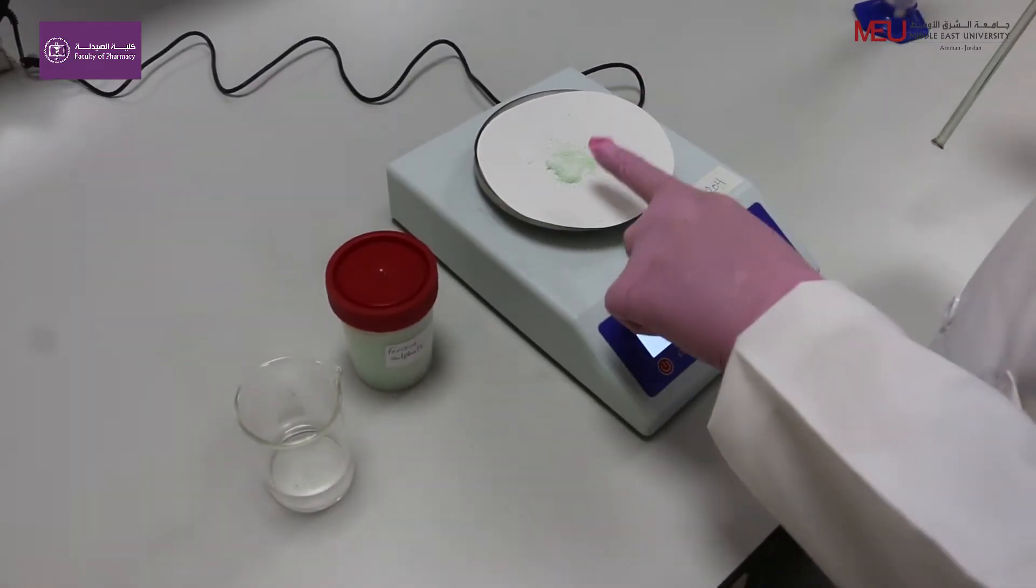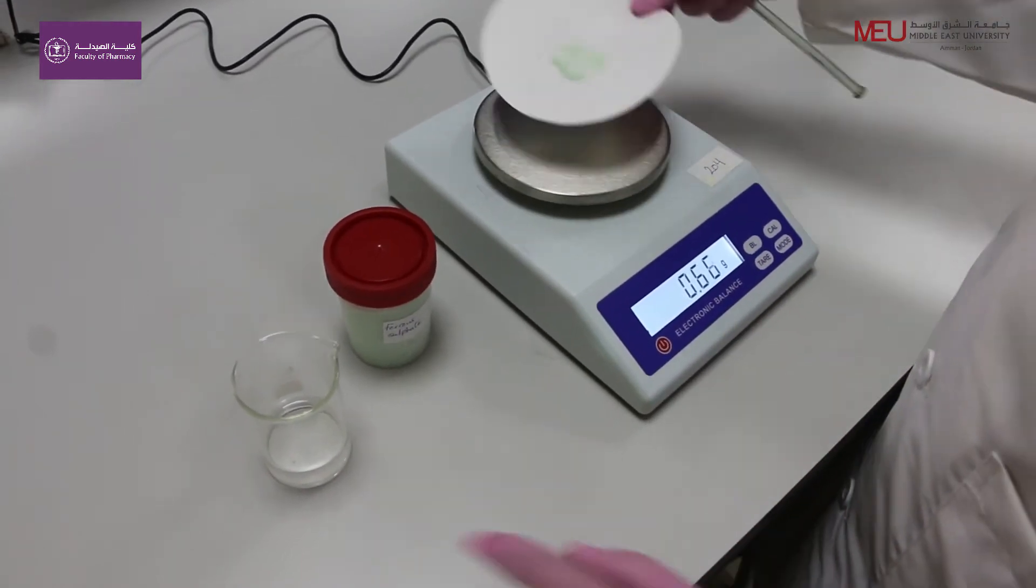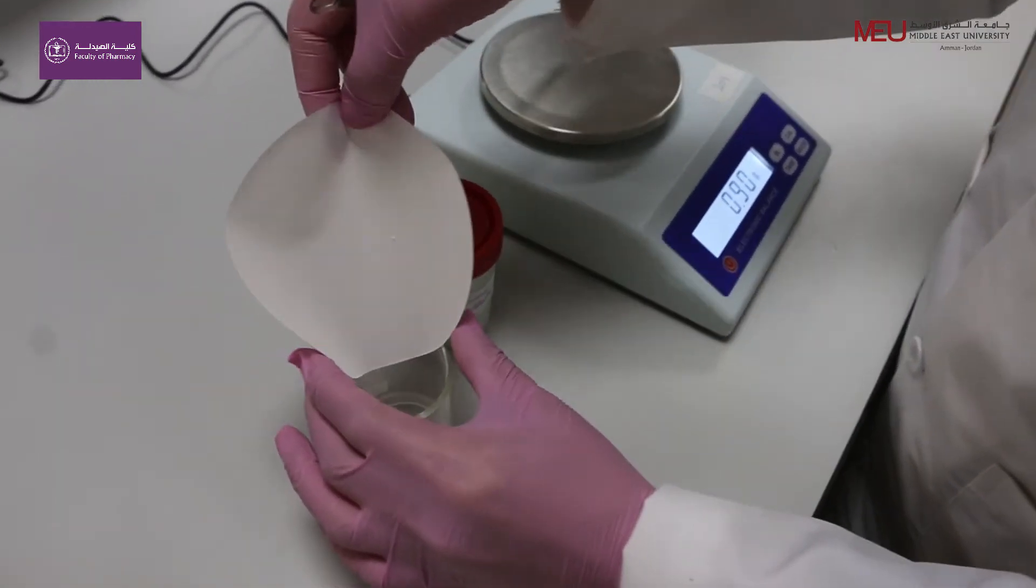Use this solution to dissolve 0.60 g of Ferrous Sulfate. Ferrous Sulfate is used as an iron supplement.